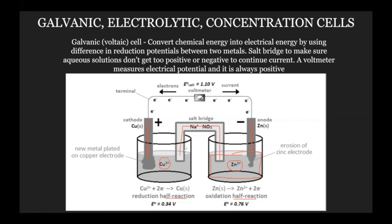Basically you're using the differences in reduction potential between two metals to convert to electrical energy, measured by a voltmeter, and you have a salt bridge to make sure the reaction continues. Key words: anode, cathode. Reduction always occurs at the cathode; oxidation always occurs at the anode. Don't think of cathode and anode as positive and negative because when we switch to electrolytic cells the signs change, but reduction is always at the cathode and oxidation always at the anode.